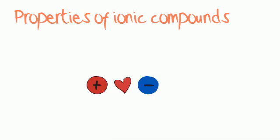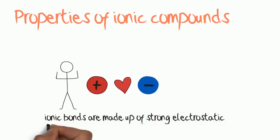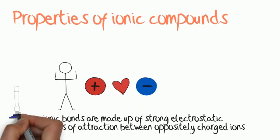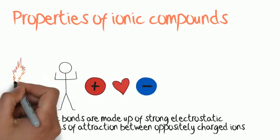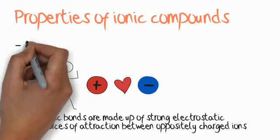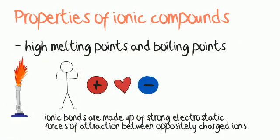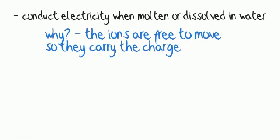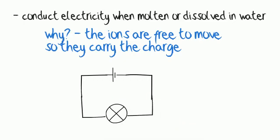Properties of ionic compounds: because the electrostatic forces of attraction between the oppositely charged ions are strong, it takes a large amount of energy to break the many strong ionic bonds holding the giant lattice together, so ionic compounds have high melting points and boiling points. Ionic compounds do not conduct electricity when solid, as the ions are fixed in the lattice and not free to move. However, if the ionic compound is molten or dissolved in water, the ions are free to move and it conducts electricity.